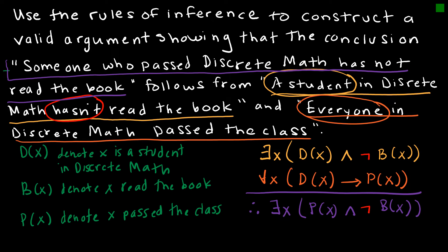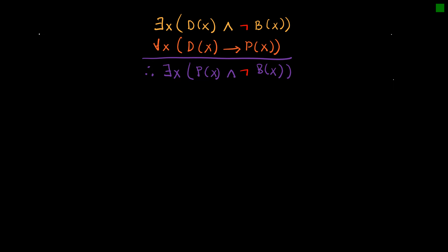I haven't proved anything yet, but I've organized my thinking so I know what my premises are and what I want my conclusion to be. Before diving into the proof, I know I want to end up at the conclusion. To get there I need to show that P(X) is true for some X and that not B(X) is also true for that same X. Let's see how we get there.